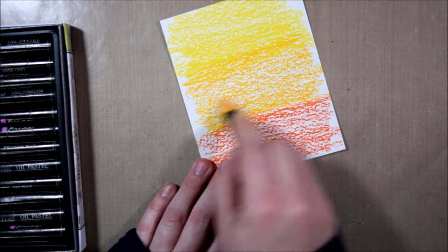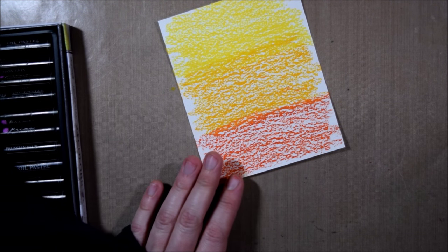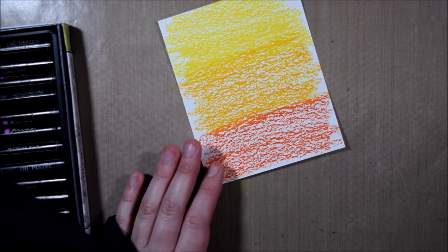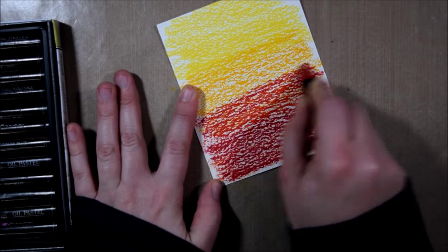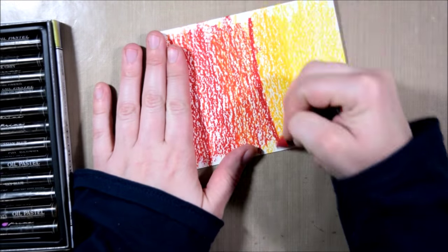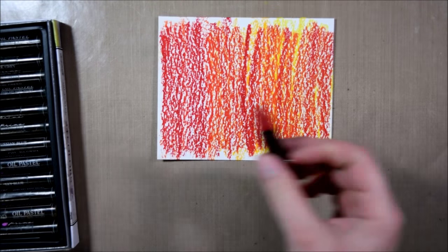I'm just trying to lay down a base of color. Then I'm taking a darker color in the same family, so in this case red, and I'm scribbling over all of that color. That might seem kind of silly at first, but it will reveal itself with the technique soon.